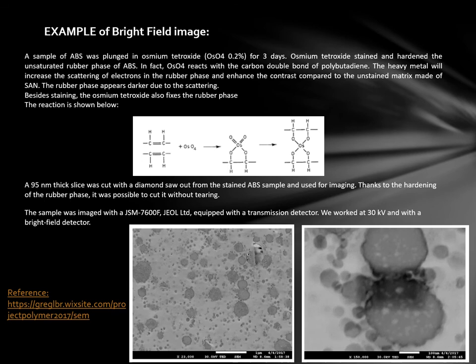Here is an example of brightfield imaging. A sample of ABS was plunged in an osmium tetroxide solution for three days, and the osmium tetroxide stained and hardened the unsaturated rubber phase of the ABS. Osmium tetroxide reacts with the double carbon bond of the beta-diene part of the polymer. The heavy metal will increase the scattering of electrons in the rubber phase and enhance the contrast compared to the unstained matrix made up of the styrene acrylonitrile. The rubber phase appears darker due to the scattering. Besides staining, the osmium tetroxide also fixes the rubber phase. A 95 nm thick slice was cut with a diamond knife from the stained ABS sample. Thanks to the hardening of the rubber phase, it was possible to cut it without tearing. The sample was imaged with an instrument equipped with a transmission detector, and the researchers worked at 30 kV with a brightfield detector. These are the images that they acquired.